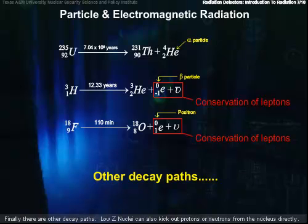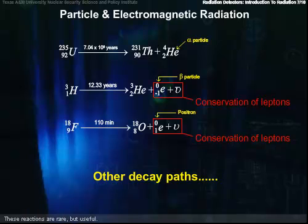Finally, there are other decay paths. Low-Z nuclei can also kick out protons or neutrons from the nucleus directly. These reactions are rare, but useful. There are other decay paths besides this, but let's stop here.